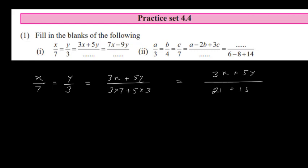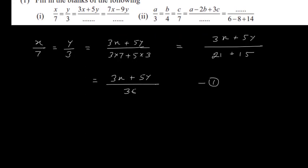So this is (3x + 5y) / 36. Consider this equation 1. We applied the theorem of equal ratios and wrote it in the format of a linear combination.